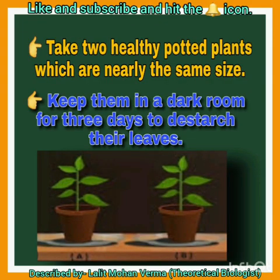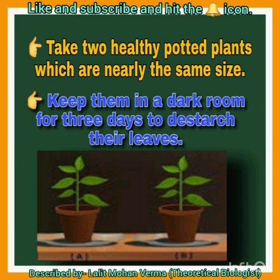First of all, take two healthy potted plants which are nearly the same size, as you can see on your screen. Now keep them in a dark room for three days to discharge their leaves.